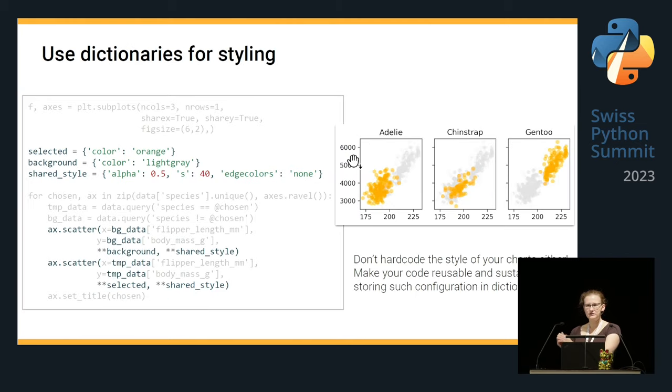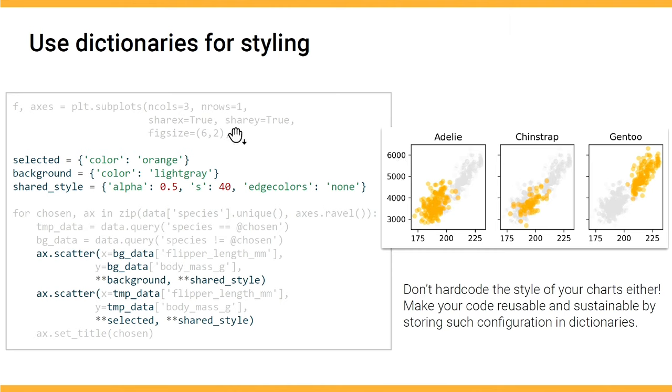What I also recommend to avoid is hard-coding the styling of the charts. You can, for example, use dictionaries to store the styling of the charts. This way, if you decide actually you don't like orange anymore, you want to switch to, I don't know, color green, you can do it very cleanly like this. And then you can unpack those dictionaries here as arguments to the plotting functions.